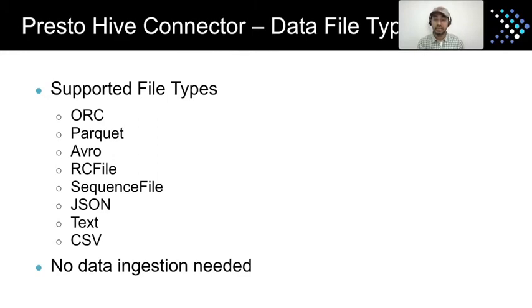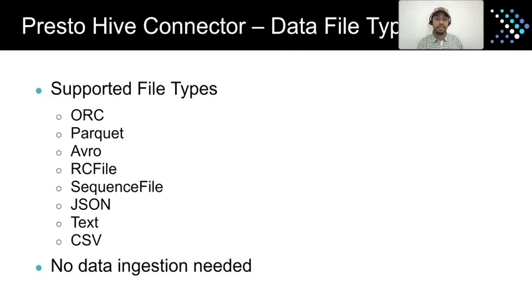Presto supports a wide range of data types and formats. We recommend Apache ORC or Parquet formats as they are the most efficient, performant, and compact. But you can also query data in JSON, CSV, and a range of other formats. The beauty of Presto is that you do not have to ingest data into yet another system — it can be queried directly where it lies in the data source.